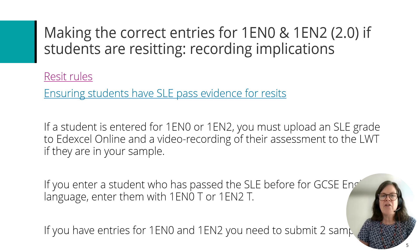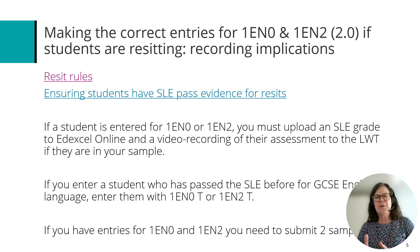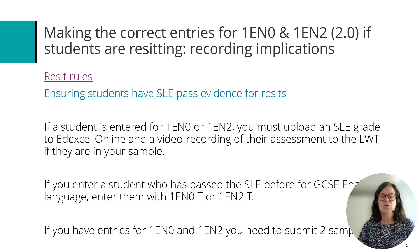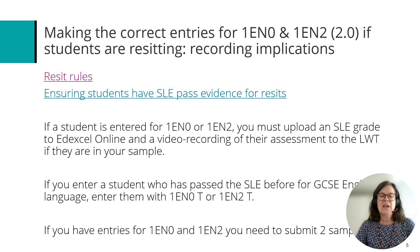A few words about making correct entries for students who are re-sitting. There are two options. Either a re-sitting student is going to redo the spoken language endorsement — in that case, you enter them as any other student with 1ENO or 1EN2 as the entry code, upload their grade to Edexcel Online, and upload a video of their assessment to the LWT if they're in your sample. If a re-sitting student wants to carry forward the SLE result from a previous sitting, you enter with 1ENOT or 1EN2T — T for transfer. If you use that process, you must have seen evidence that the student has passed the SLE before, from their GCSE certificate or provisional statement of results.